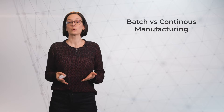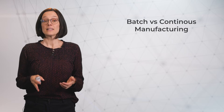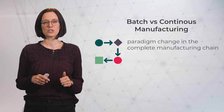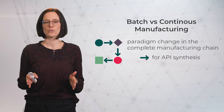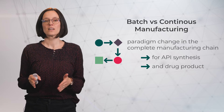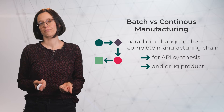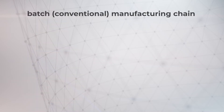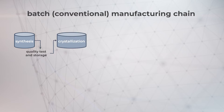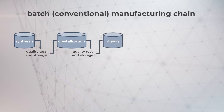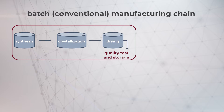What does this actually mean with regard to the manufacturing process? This means that the paradigm of the manufacturing chain has completely changed, which affects the API synthesis as it does the API drug production. Usually, batch manufacturing means that you do a synthesis step first, then you store and check the quality, you do a crystallization step, then again you check the quality after you have stored it. Same for the drying step, and then you store and check the quality again. Or you do all these steps and check the quality only then, and only then you package and ship it.